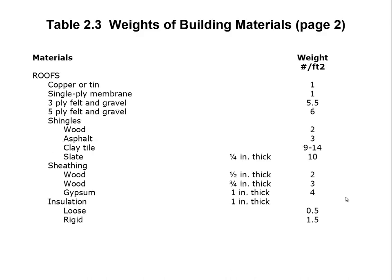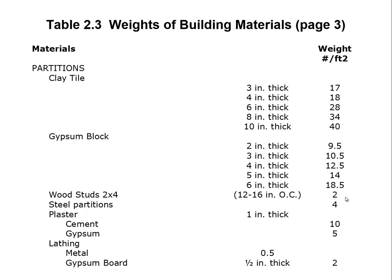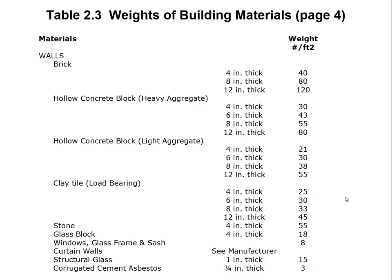Continuing on, there are many other building materials given on a per-square-foot basis. Let's look at hollow concrete block made out of light aggregate, 8 inches thick. This weighs 38 pounds per square foot of wall — in other words, when you look straight at this 8-inch-thick wall, every square foot of that wall weighs 38 pounds. This is much more useful than calculating from a 1-inch thickness of solid concrete, because in solid concrete the geometry is simple.